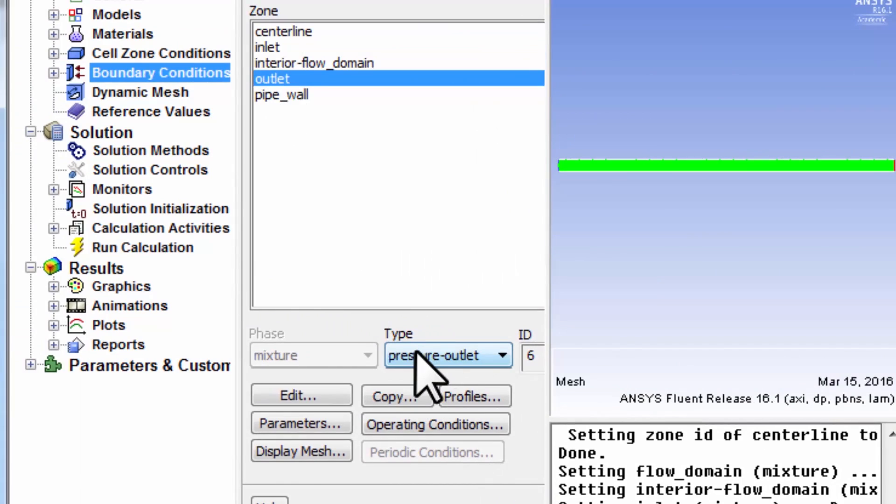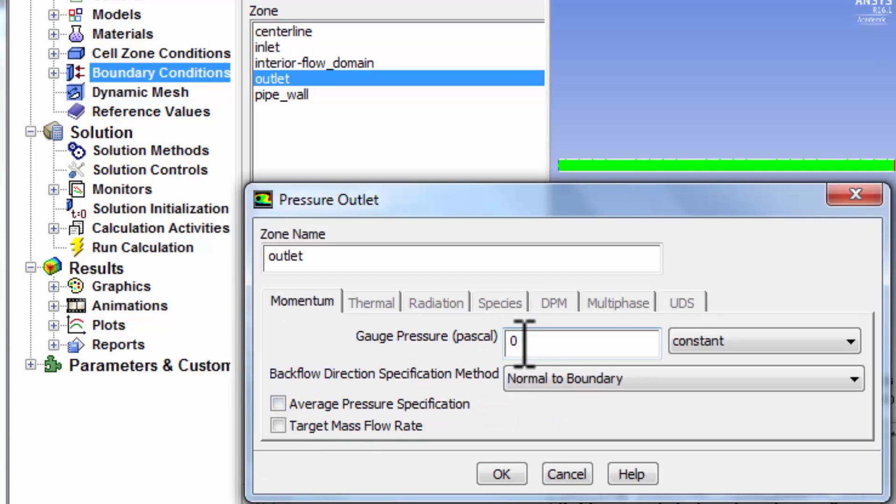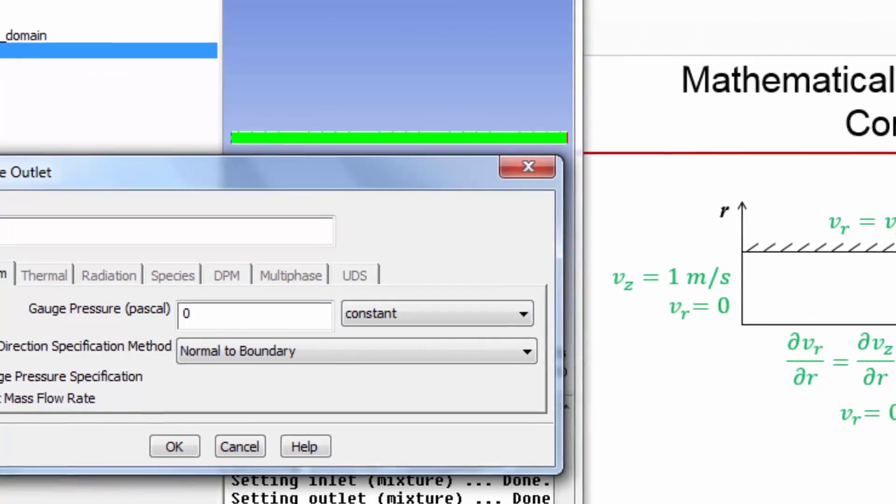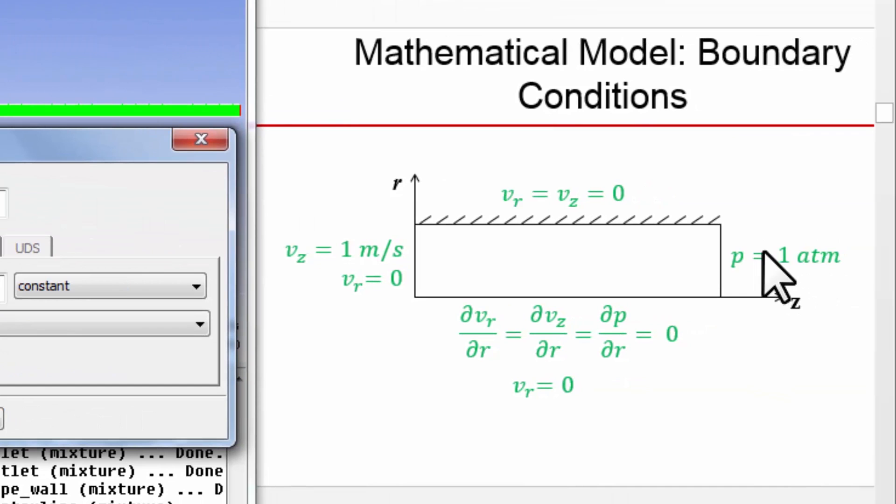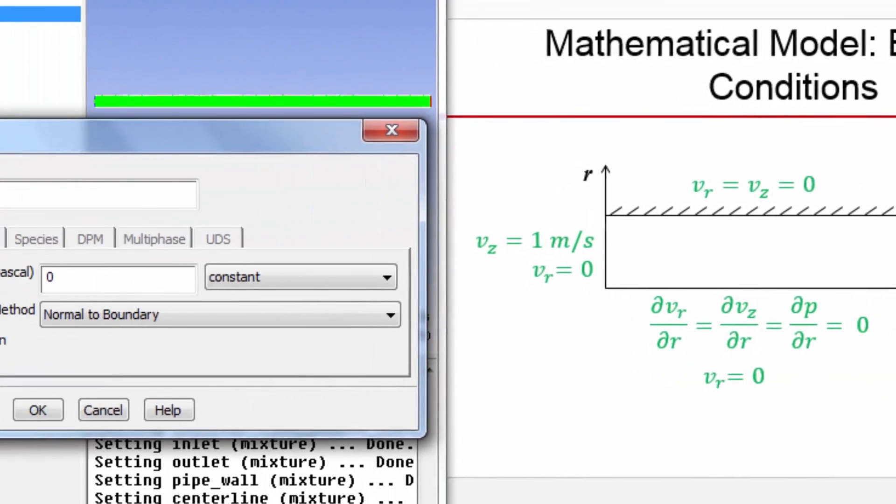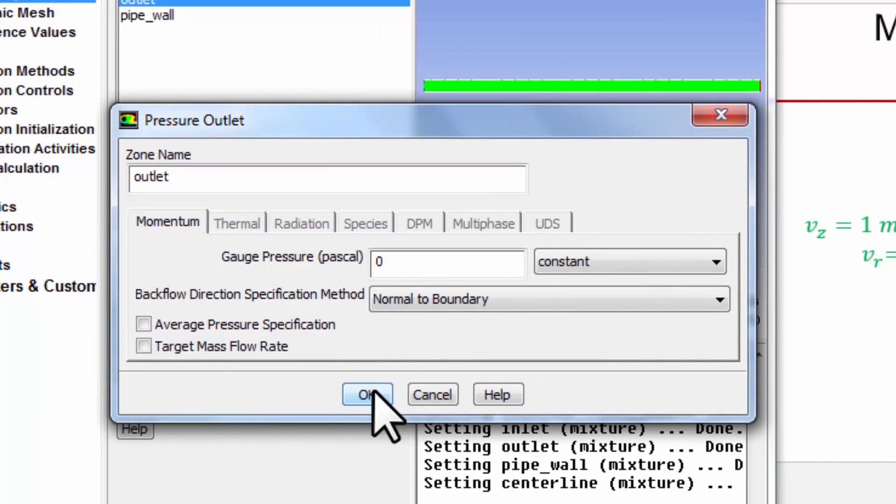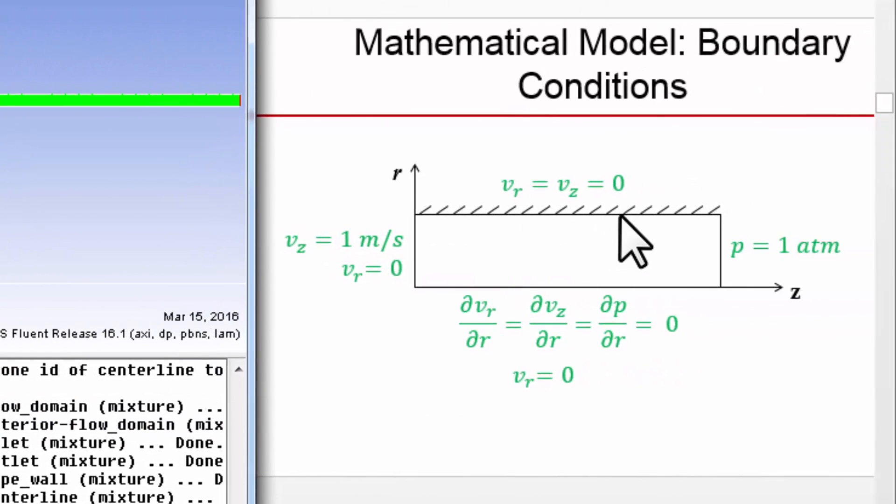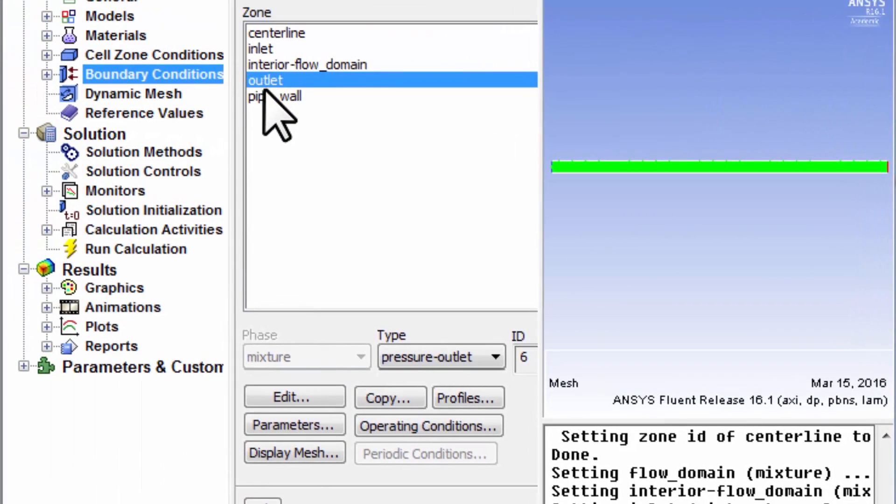It says hey, probably flow is going to go out of this boundary and you want to set the pressure there. That's a guess—that's right. Say edit and the gauge pressure by default is zero and the corresponding absolute pressure is one atmosphere. So the default applies, nothing to do there.